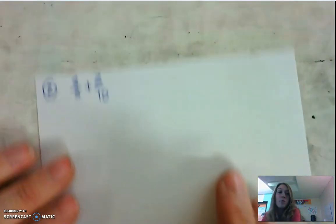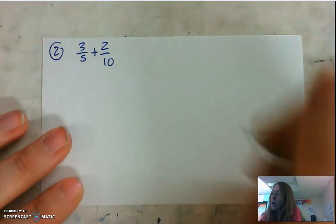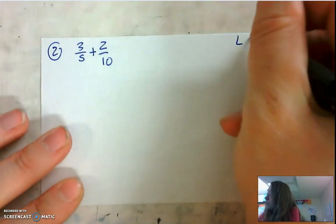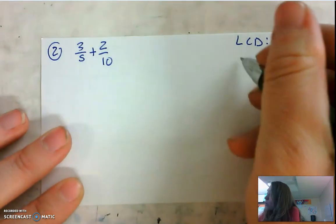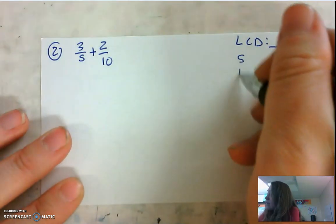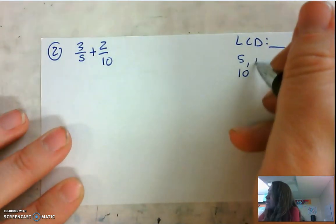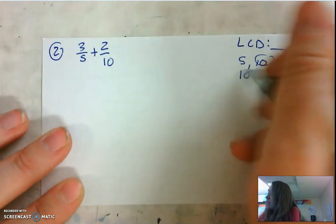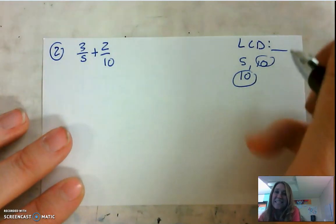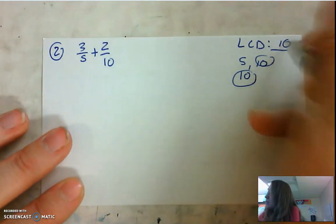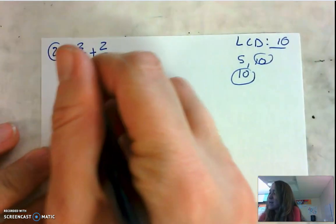Moving on to number 2, it's another addition problem, so we do need to find the LCD. We're looking for the LCD of 5 and 10. We say 5, 10 — stop. We found that LCD, easy peasy, lemon squeezy. It's 10.